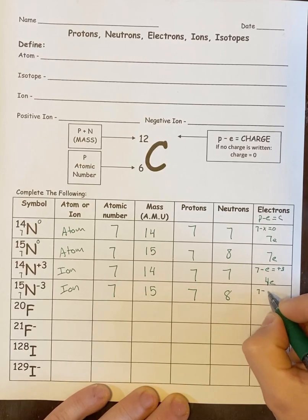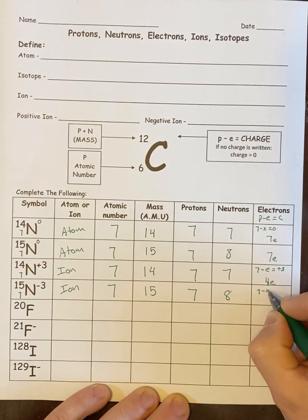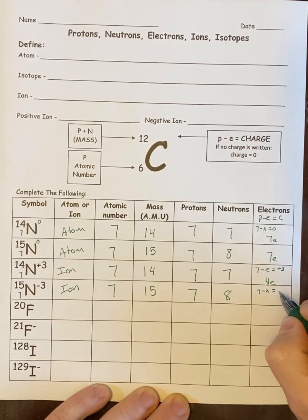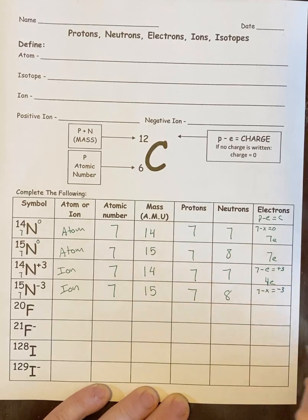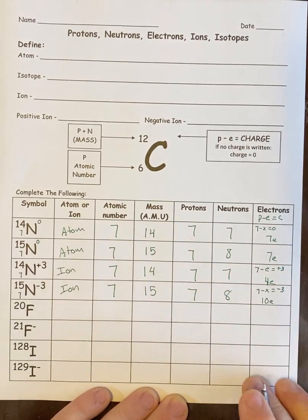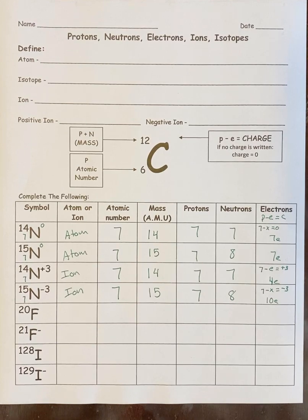And the last one, 7 minus the electron number equals negative 3. So in this case, I need to have 10 electrons. And that's how you figure out the electrons. Hopefully there's no questions on that. I am going to go over a few more because there are a couple things I need to mention before I have you do the rest.